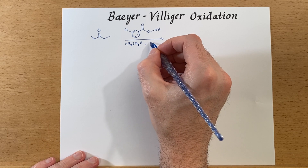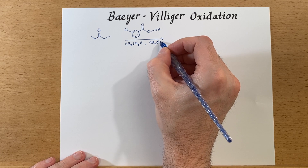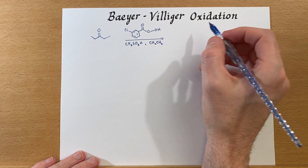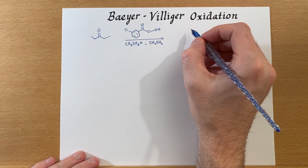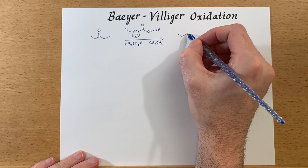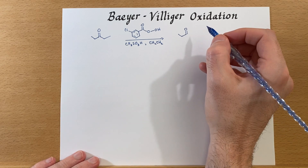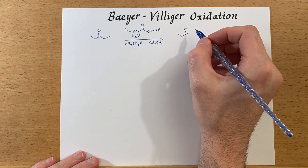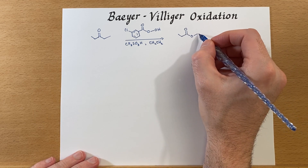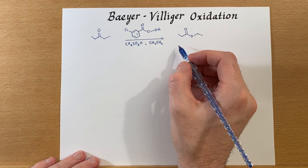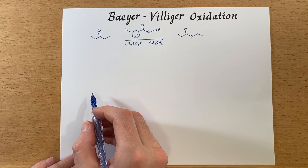We'll add some dichloromethane as our solvent. This reaction will turn a ketone into an ester. It will also turn an aldehyde into a carboxylic acid, but we have other ways of doing that with better atom economy, so I think the bigger usefulness of this is converting ketones into esters.